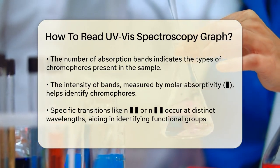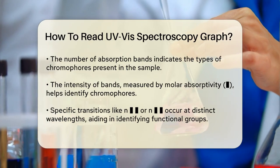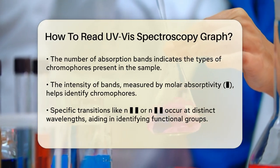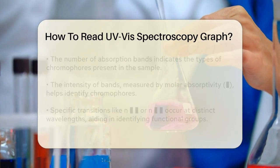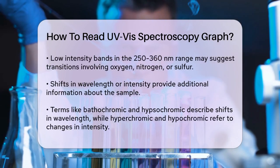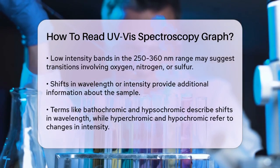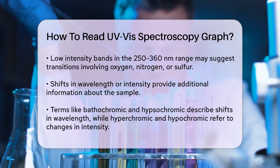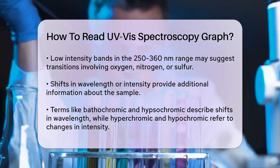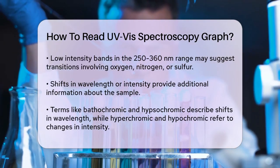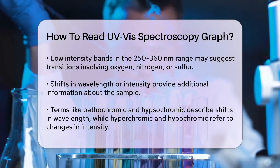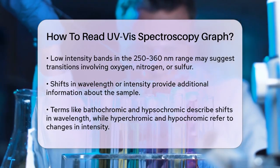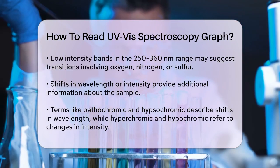Third, characterize the chromophores. Different chromophores absorb light at specific wavelengths. Transitions like n→σ* or n→π* occur at different wavelengths and can help you identify groups like amines, alcohols, or carbonyl groups. A single band with low intensity in the 250 to 360 nanometer region might indicate a transition involving oxygen, nitrogen, or sulfur atoms.